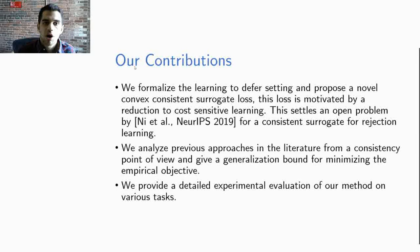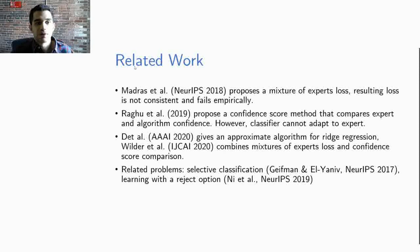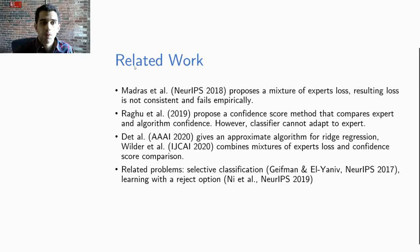This problem has been attracting more and more attention recently. In 2018, Madras et al. proposed a mixture of expert loss. However, the resulting loss is not consistent and fails empirically. Raghu et al. proposed a confidence score approach that compares expert and algorithm confidence. However, this approach does not allow the classifier to adapt to the expert weaknesses and strengths.